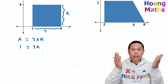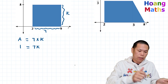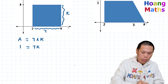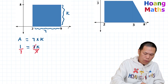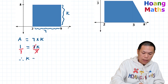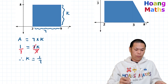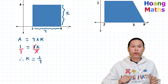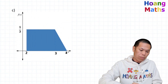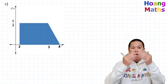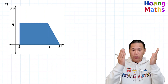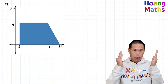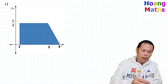Seven k equals one. I divide both sides by seven, so k equals one over seven. Hope you got it correct. Part C — it is a trapezium, and the area of this trapezium must equal one because it is a probability density function.